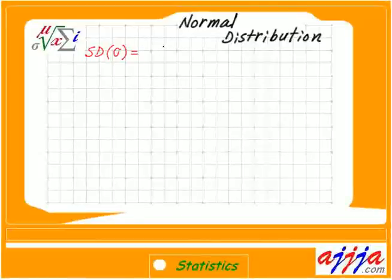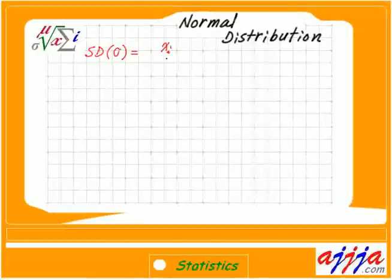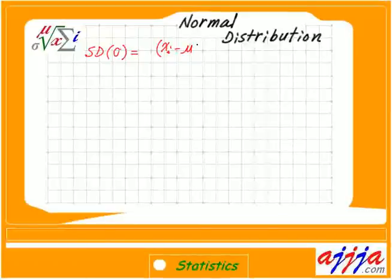Formula-wise, we have so many values, that's why we use Xi — where i goes from one through whatever number. So X1, X2, X3, and so on, minus the mean value. The mean value can be mu right here.